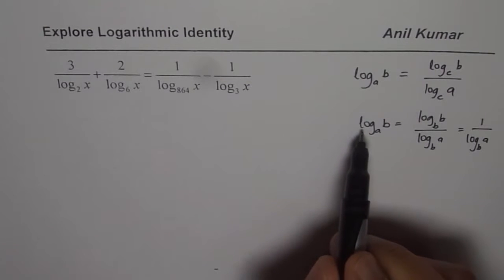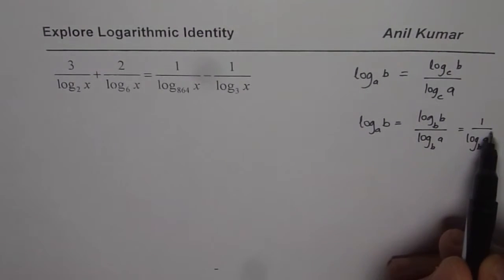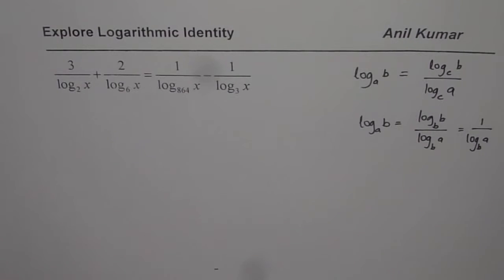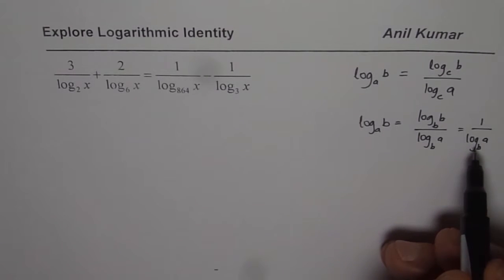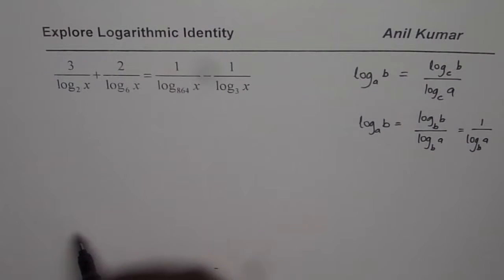In a way I wrote log to the base A of B as 1 divided by log to the base B of A. Do you see that? So we could write this as a reciprocal function. This itself is a very important question and I have seen it so many times in the test paper. Anyway in this example we are going to apply that derivation to solve the identity.